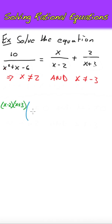Noting this, we'll begin to solve by multiplying both sides of the equation by the least common multiple of the denominators, so x minus 2 times x plus 3.